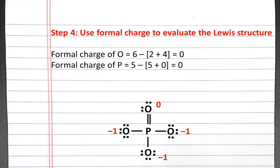And to calculate the new formal charge on phosphorus, it's 5 subtract 5 bonds plus zero lone pair electrons, which is equal to zero.